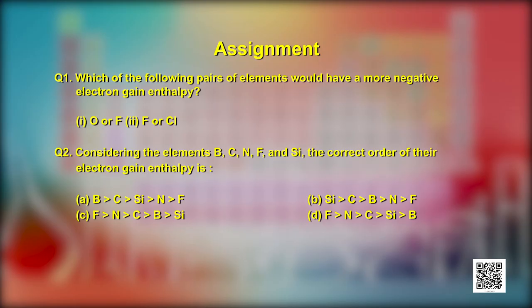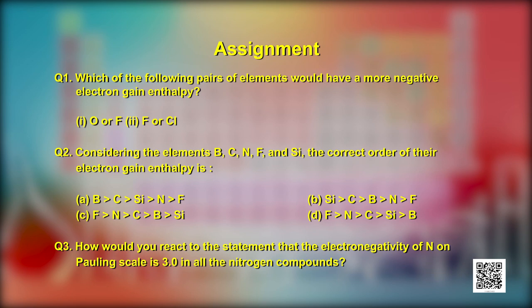Here are a few questions to test yourself. Question 1: Which of the following pairs of elements would have a more negative electron gain enthalpy and why? Oxygen or fluorine? Fluorine or chlorine? Question 2: Considering the elements boron, carbon, nitrogen, fluorine, and silicon, what is the correct order of their electron gain enthalpy? Question 3: How would you react to the statement that the electronegativity of nitrogen on the Pauling scale is 3 in all nitrogen compounds? Keep practicing and keep learning. Have a nice day. Thank you.